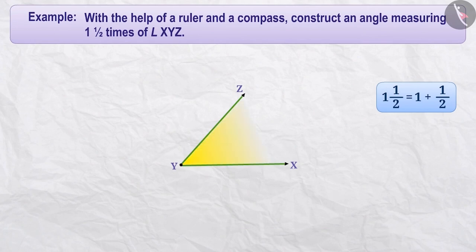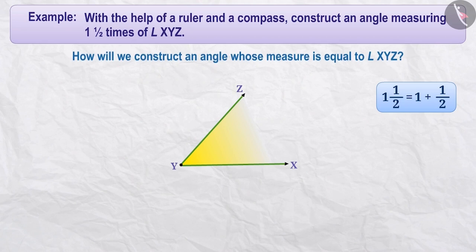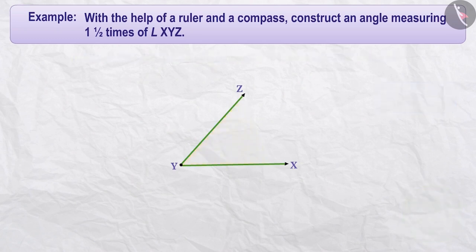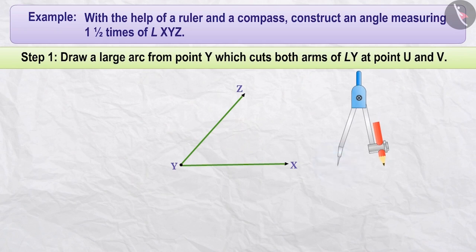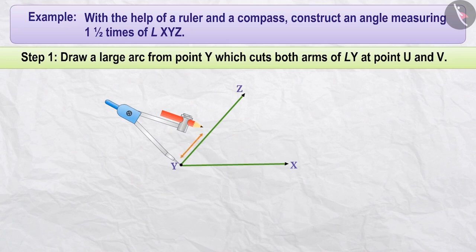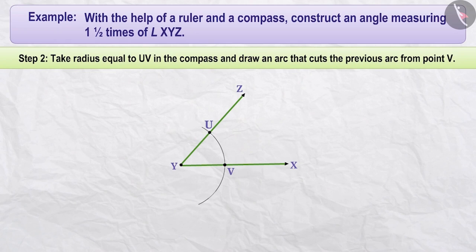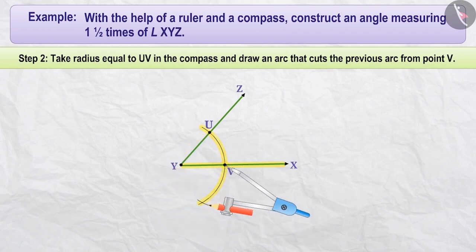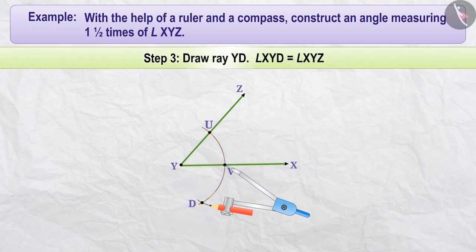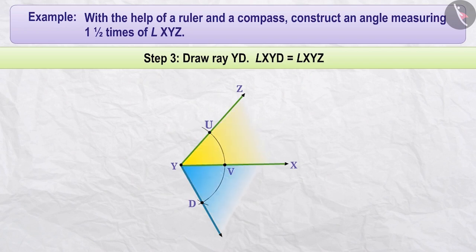Angle XYZ is given. Step 1: Using a compass, place its pointed end at vertex Y, open it to the required radius, and draw an arc intersecting the arms of angle XYZ at points U and V. Step 2: We will keep ray XY common in both angles. Taking the distance UV, place the pointed end at V and draw an arc cutting the first arc; both arcs intersect at point D. Step 3: Draw ray YD from vertex Y through D. We obtain angle XYD which is equal to angle XYZ.